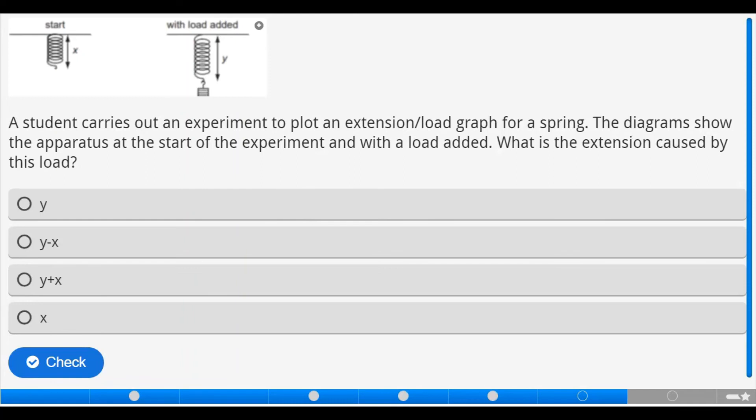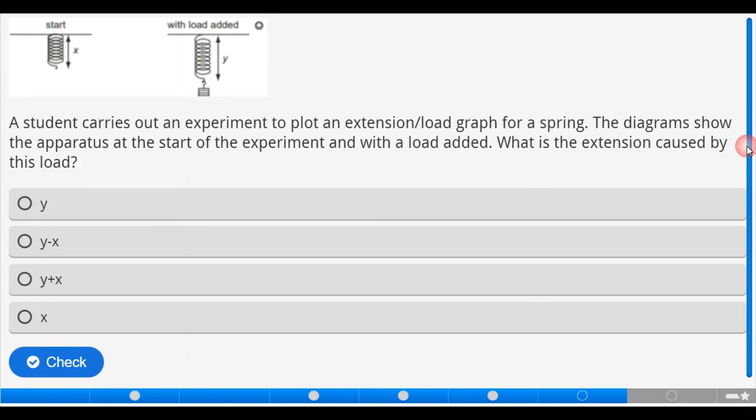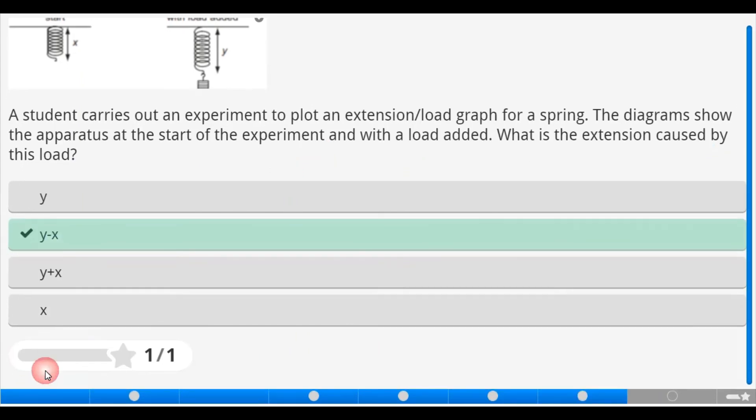We have this question to answer also. A student carries out an experiment to plot an extension load graph for a spring. The diagram shows the apparatus at the start of the experiment and with a load added. What is the extension caused by this load? Now if we should go back to the formula for extension, that would be l minus l naught. We have e to be equal to l minus l naught. Now our extension will be, what is our l? Our l is with the extension, and if we should look at it, that is when load is added, that will be y minus the original length without the load, that is x. So do we have y minus x? Yes. So let's pick it and check. We have y minus x and let's check. That's correct.